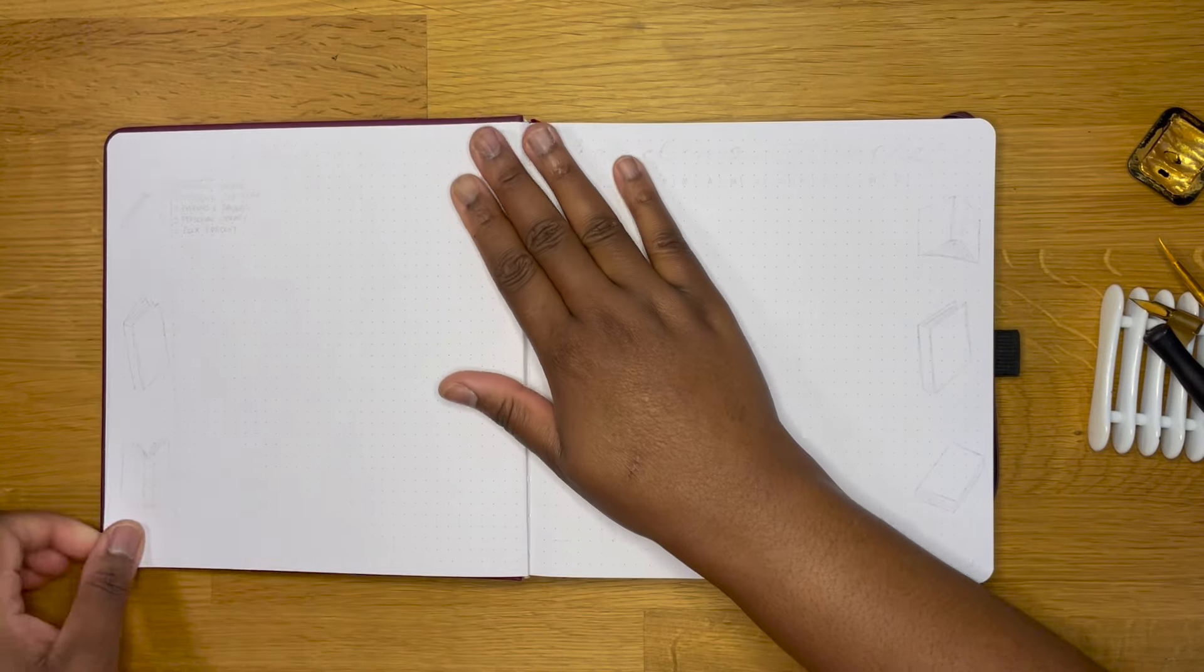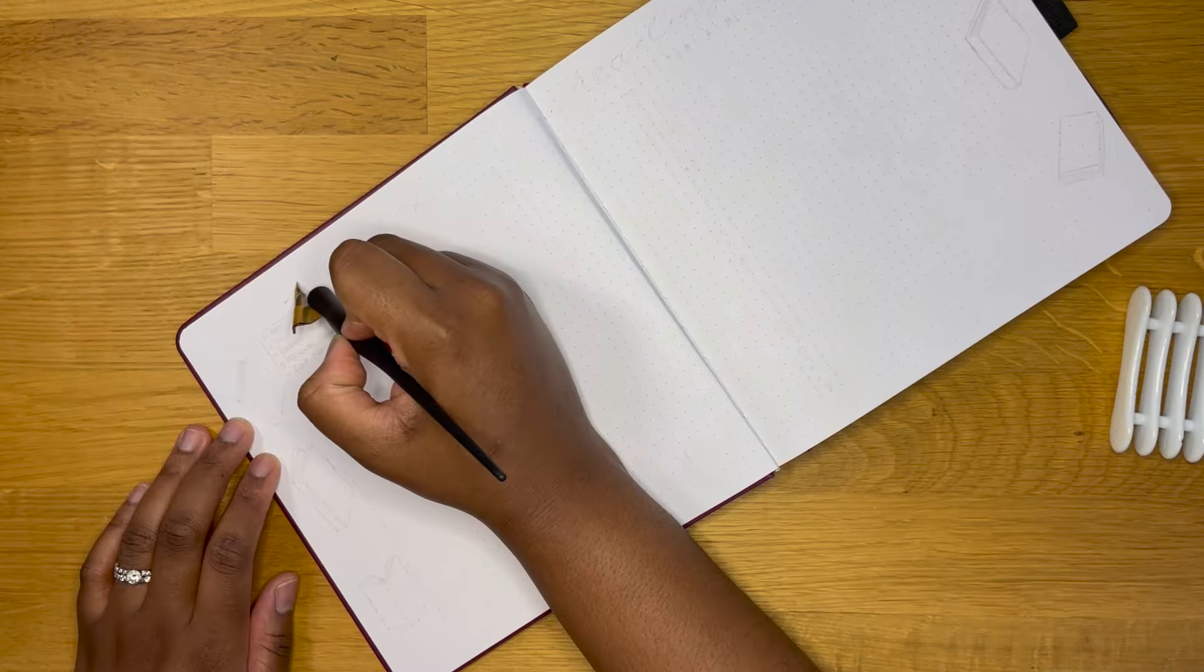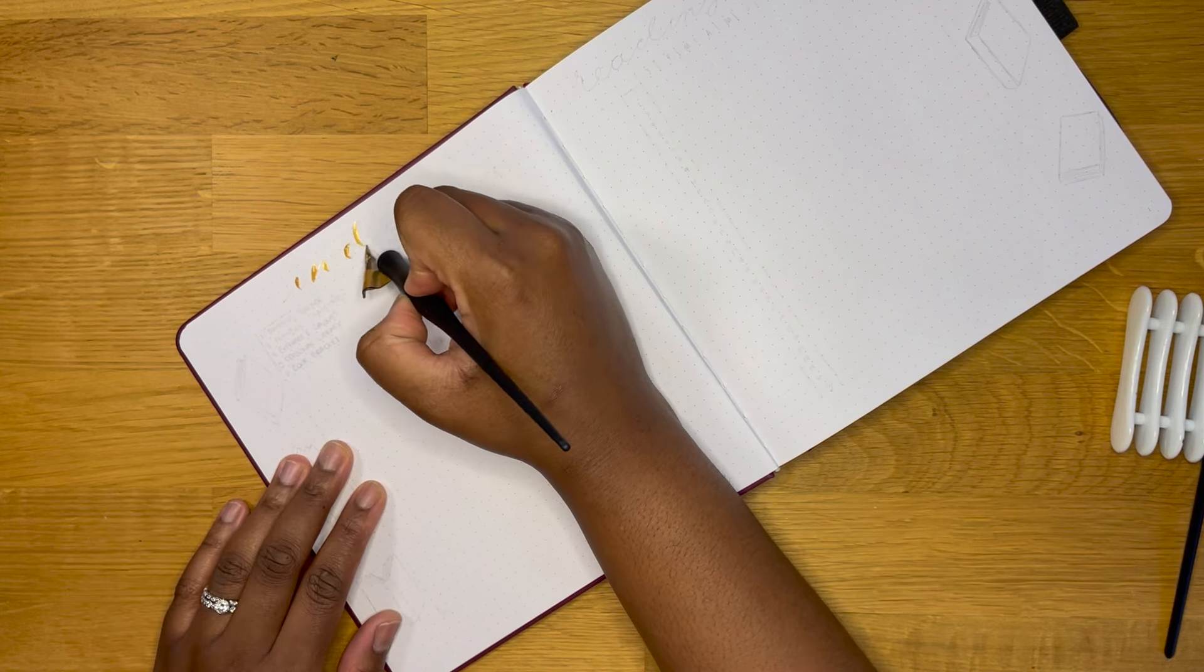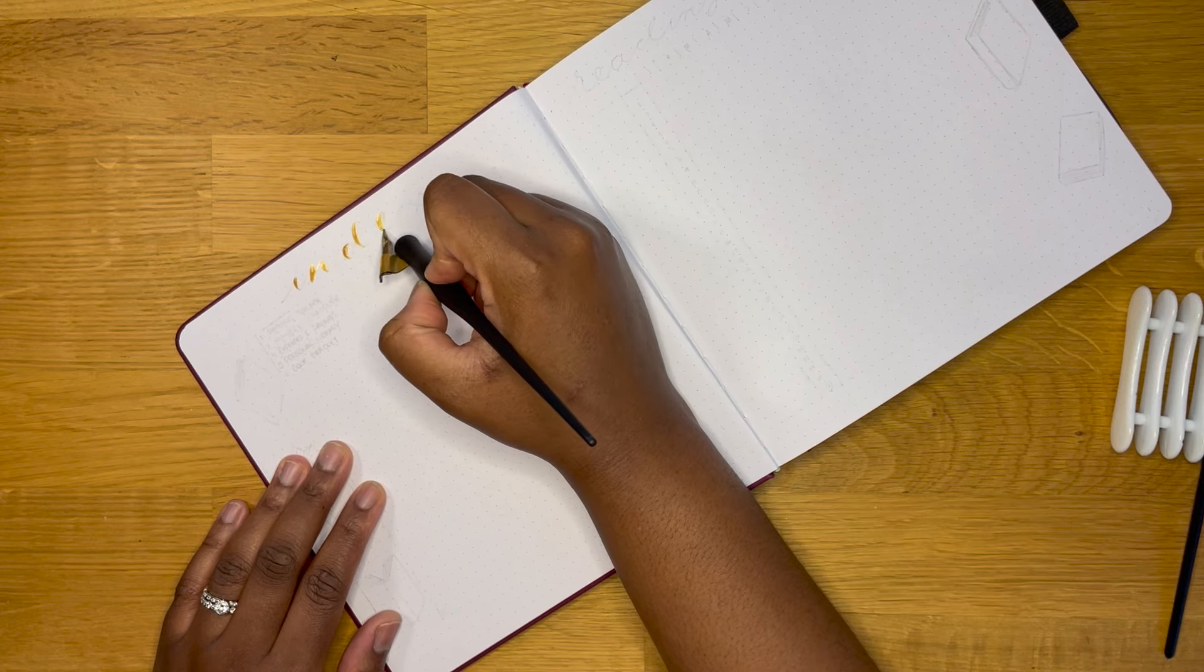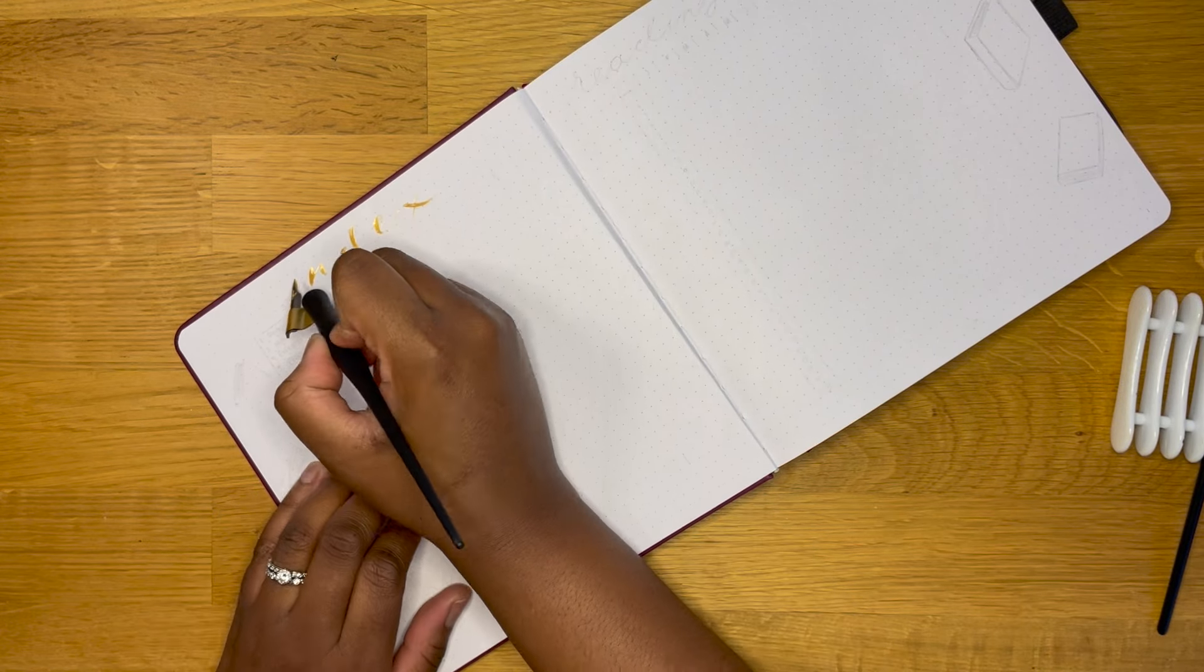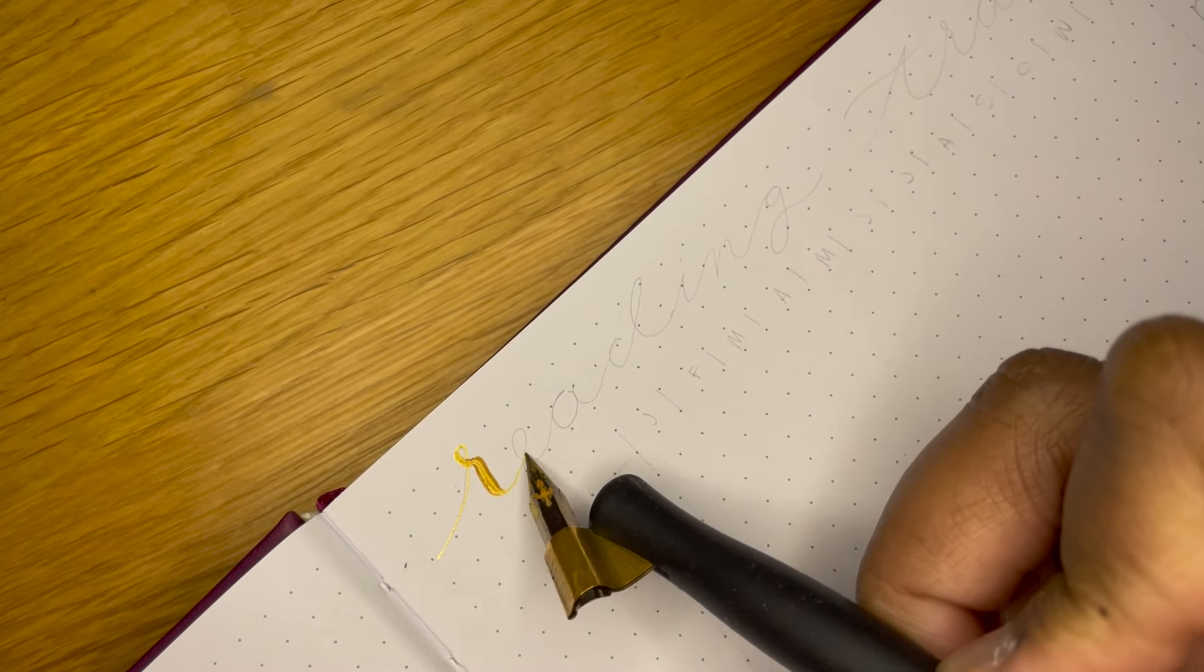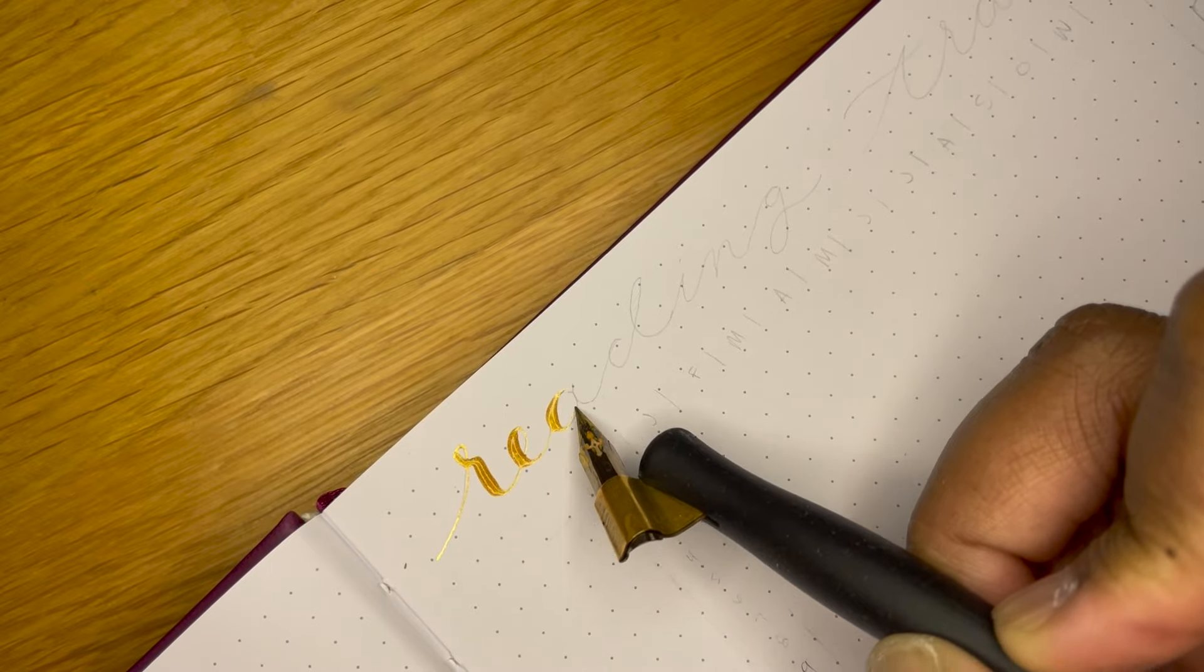Moving on to the next two pages, I have my index on the left side and my reading tracker on the right side. Let me just say I'm not sure how smart it was to use this gold on all the headers because it takes a while to dry, so I'm having to take a little bit longer to set up these pages than I thought I would.